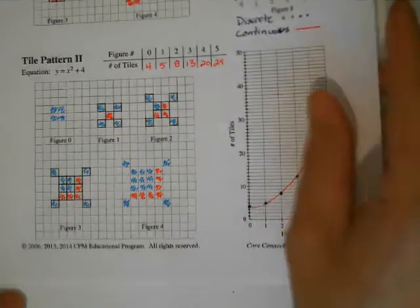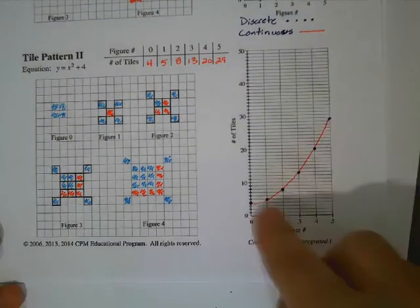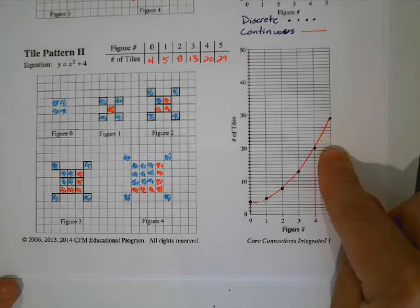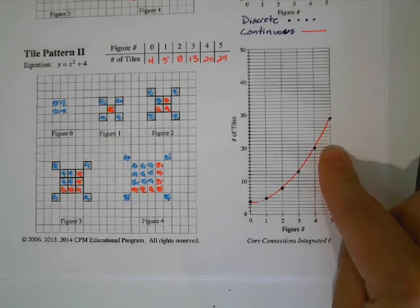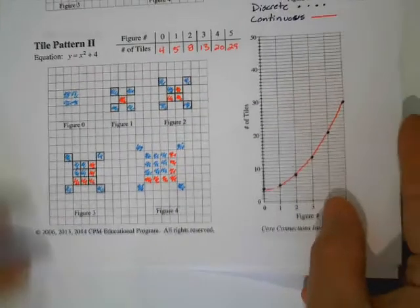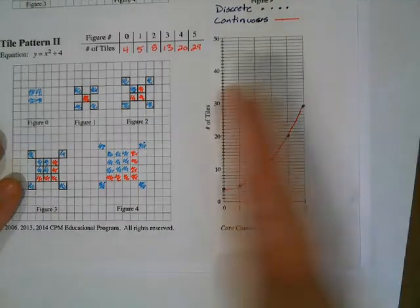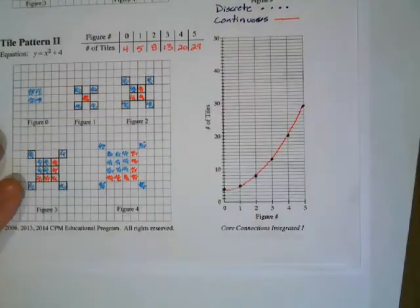So looking at this one, what's its shape? It's definitely a curve this time instead of a line. We have to also look at, is it increasing or decreasing from left to right? From left to right, the y-values are getting bigger, so it's increasing.